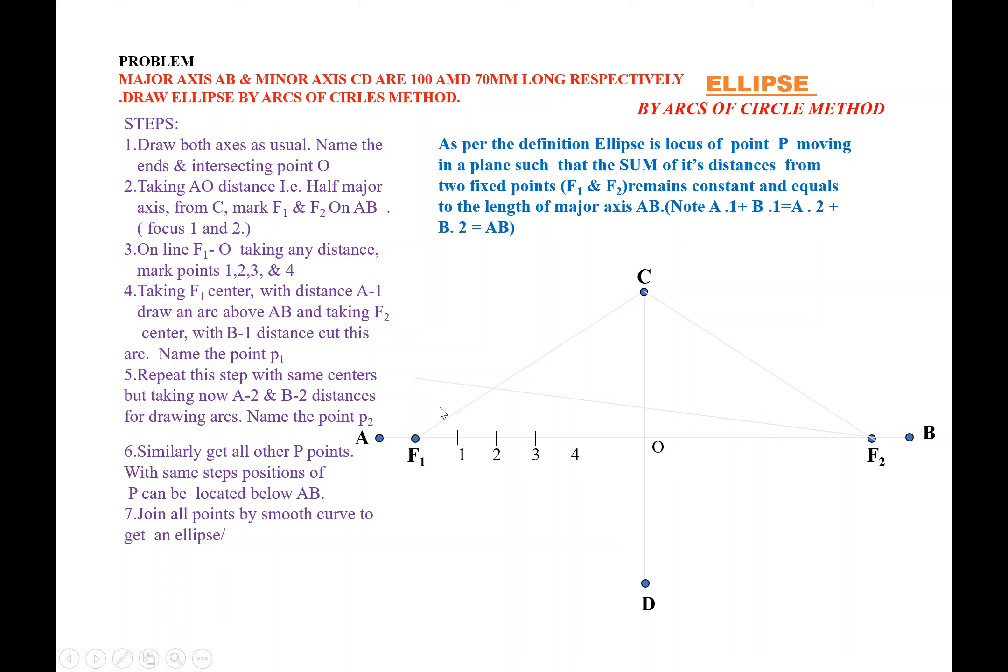Again, B1 is the radius, F2 is the point. Same similarly, A2, B2, A3, B3. We can find out the distance.